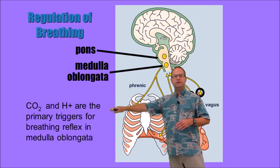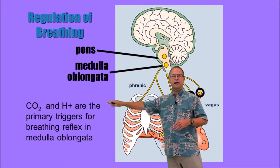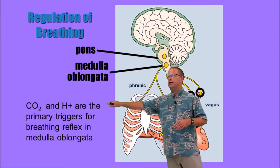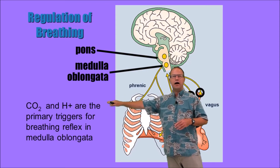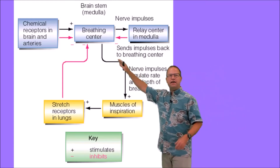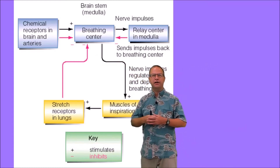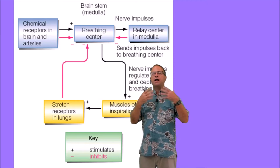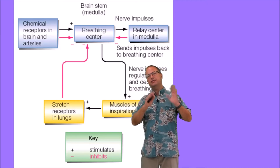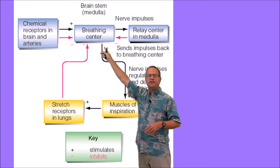As the body retains more carbon dioxide, carbon dioxide causes the blood to become more acidic, which reduces the pH and leads to more hydrogen ions. Here's a diagram of what's going on. We have chemoreceptors in the brain and also in the blood vessels that are monitoring carbon dioxide, hydrogen ions, and to a lesser extent, oxygen. That data is sent as input to our breathing center in the pons and medulla oblongata.